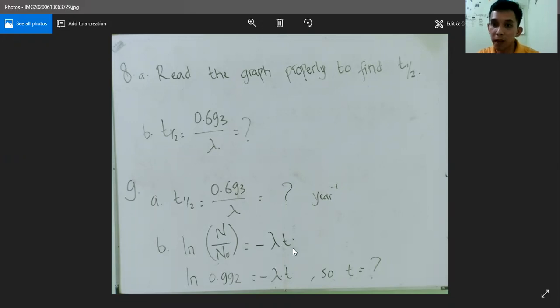And for part B, because they ask you what is the age of the rock, it means we need to find t. Now, if we use half-life, we directly use ln 2 here, logarithm natural 2. But because here we do not use the number of the half-life, but they give us the proportion which is 99.2 percent...